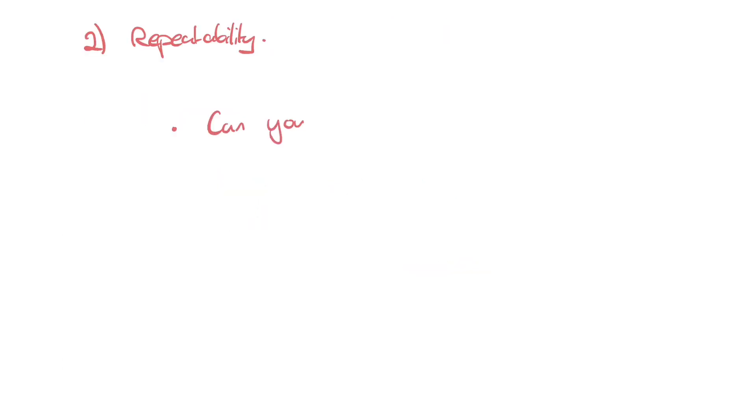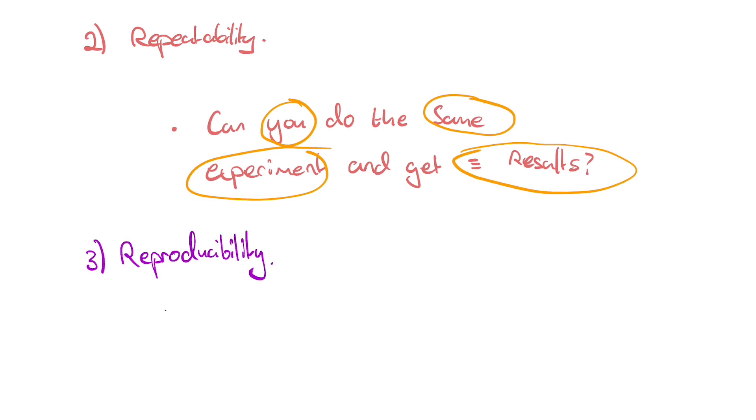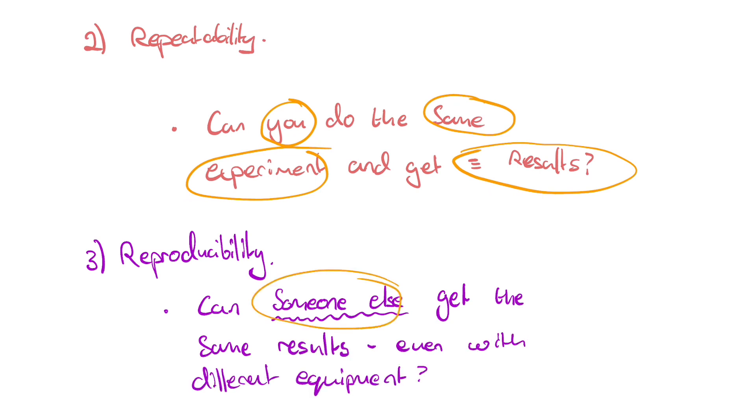Repeatability. A measurement is repeatable if the original experimenter repeats the investigation using the same method and equipment and obtains the same results. Reproducibility. A measurement is reproducible if the investigation is repeated by another person or by using different equipment or techniques and the same results are obtained.